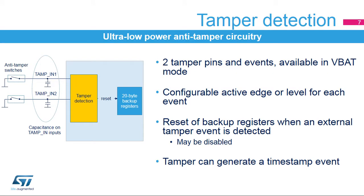The TAMP embeds ultra-low power tamper detection circuitry. The purpose is to detect physical tampering in a secure application and to automatically erase sensitive data in case of intrusion. Two tamper pins and events are supported and are functional in all low-power modes and in VBAT mode. The detection can be edge or level triggered, and the active edge or level is configurable for each event. A pre-charge time is determined by the TAMP preach bits in order to support large capacitances on the TAMPx inputs. A tamper event can generate a timestamp event to record the date of the intrusion attempt. The capacitors shown in the figure perform filtering. If no external capacitors are explicitly connected to a tamper input, they provide a model of the trace capacitance.